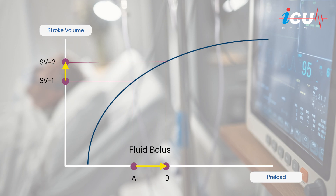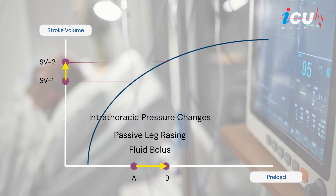An alternative is the passive leg raise test, which temporarily mobilizes around 300 ml of blood. If this maneuver leads to a 10% increase in stroke volume or more, the patient may be fluid responsive. Another method involves evaluating the variation in intrathoracic pressure in mechanically ventilated patients.